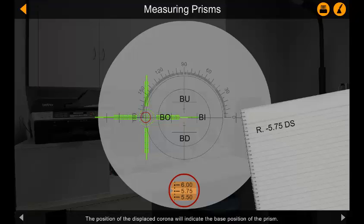The position of the displaced corona will indicate the base position of the prism. In this example we are using a base out prism with the right eye lens, hence the green corona is displaced outwards.